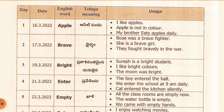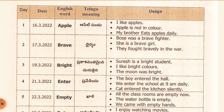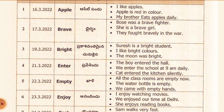19th March: Bright. Telugu meaning: Prakasa Vantamaina, Churkaina. Sureshi is a bright student. I like bright colors. The moon was bright. 21st March: Enter. Telugu meaning: Prave Sintu. The boy entered the hall. We entered the school at 9 a.m. daily. The cat entered the kitchen silently.